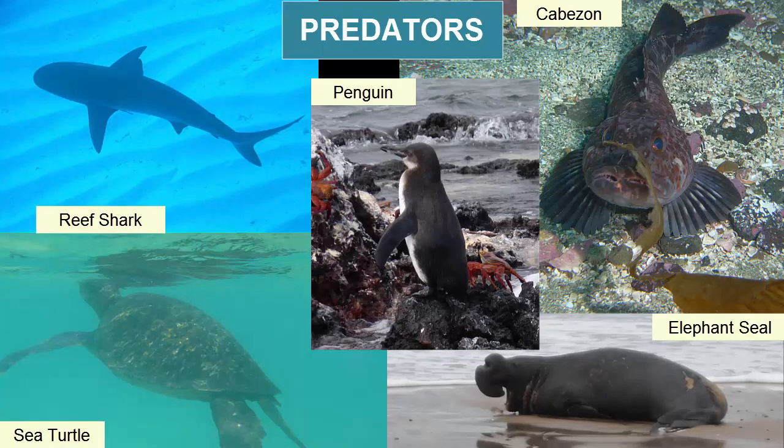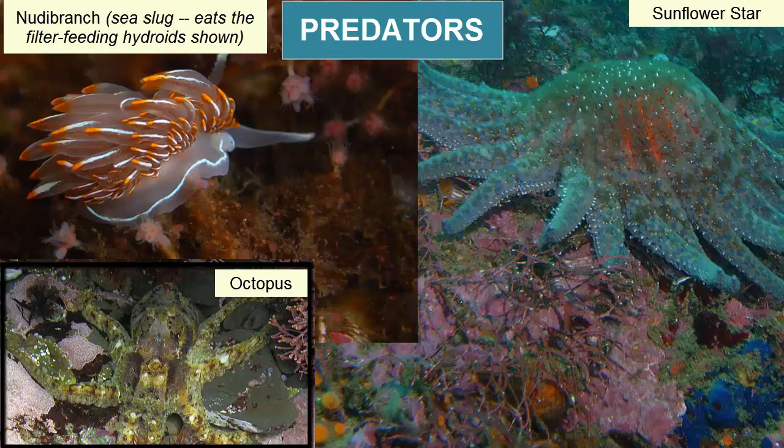Predators hunt their prey, ingesting live animals. Examples include most fish, reptiles, birds, and mammals, some sea urchins and snails, cephalopods, and sea stars.